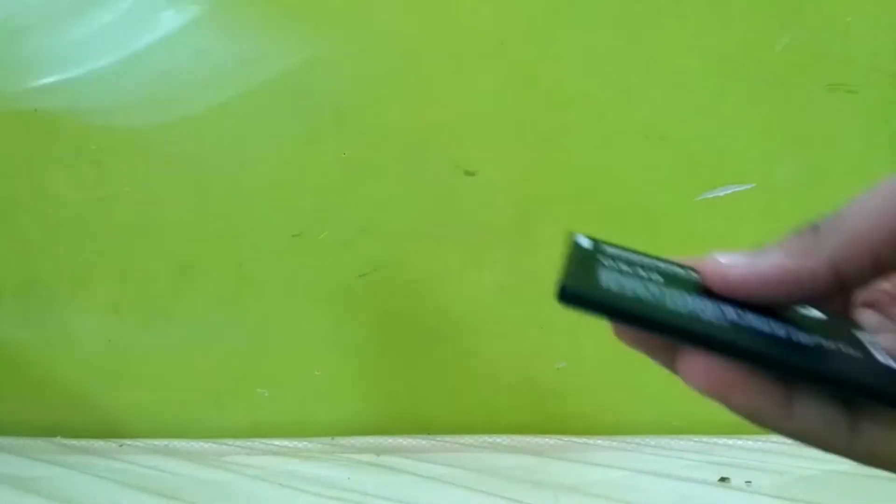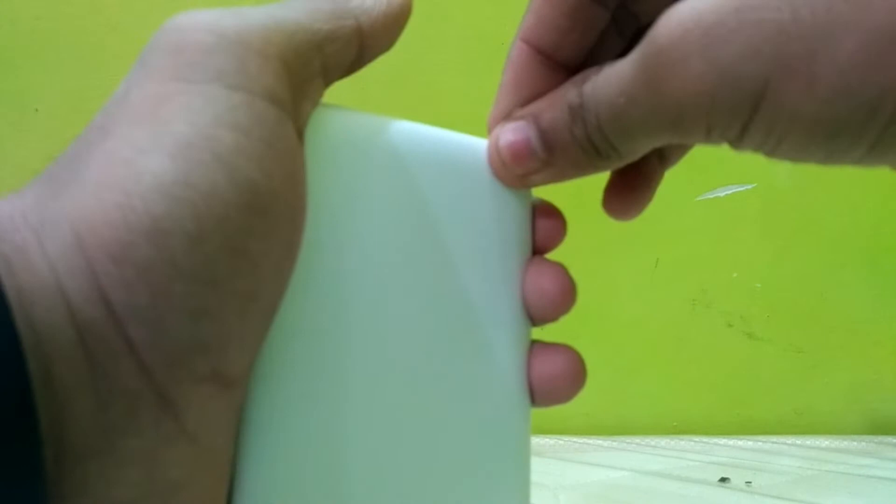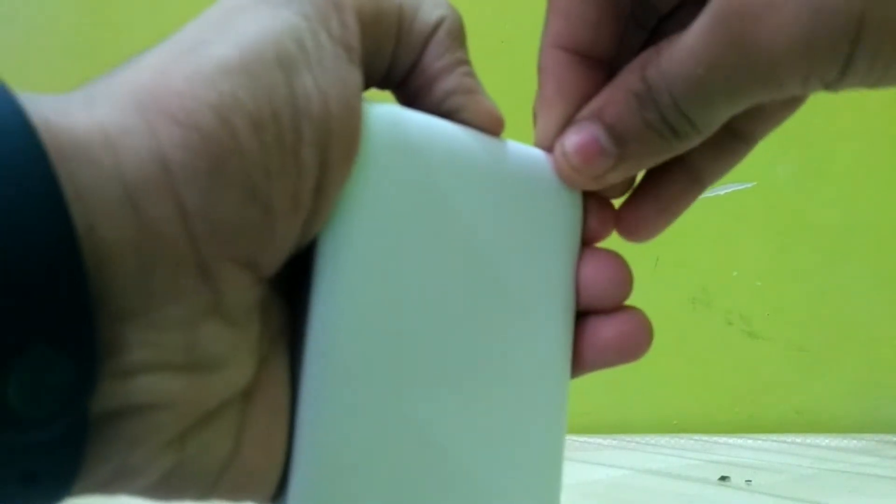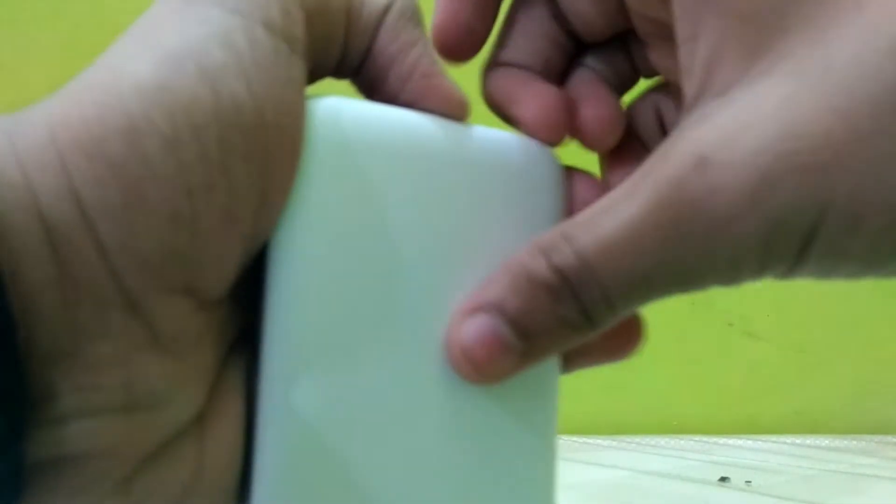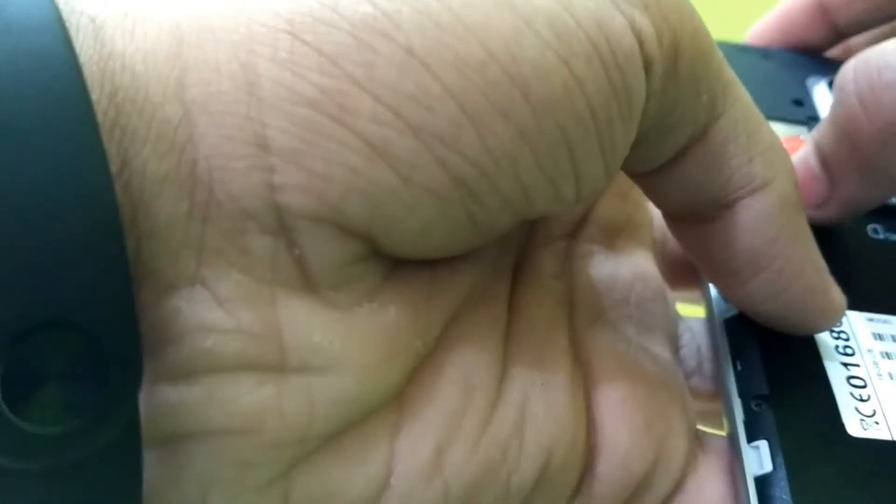So let's take out the battery out of the box and this is a seal I have to open, let's put some pressure. Yes, let's pull it out. Yes, this have one memory card slot and two SIM slots. Top is the memory card and two are the SIM.